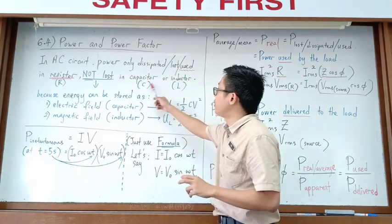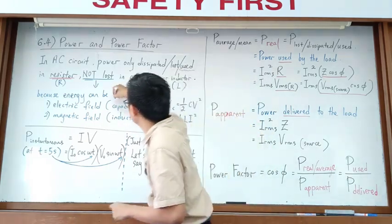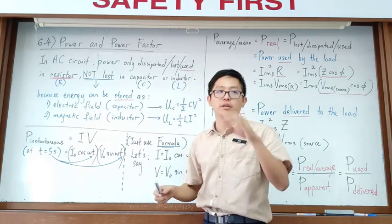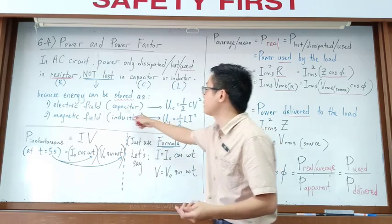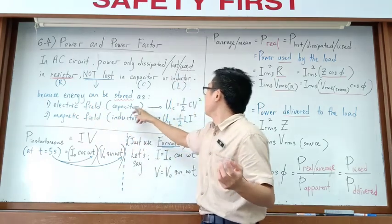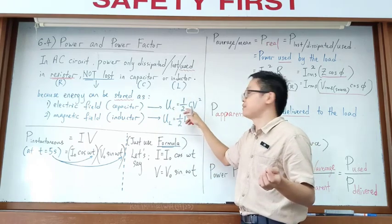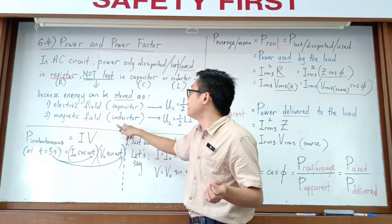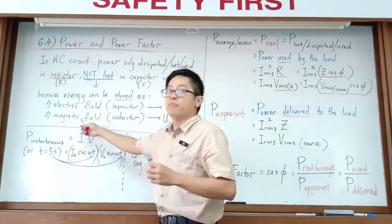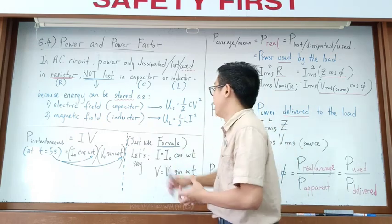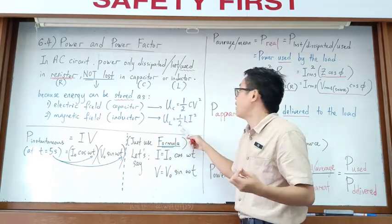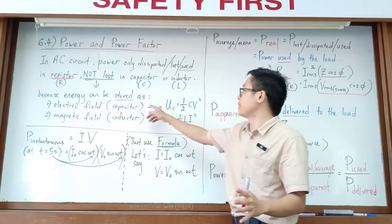Power is not lost in capacitors or inductors because energy can be stored inside them. In a capacitor, energy is stored in the form of an electric field, calculated by the formula U = ½CV². In an inductor (solenoid), energy is stored in the form of a magnetic field, calculated by U = ½LI².